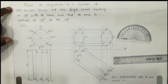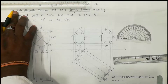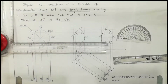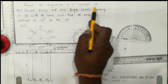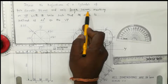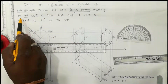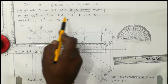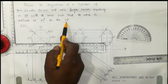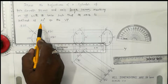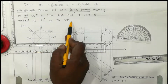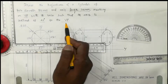The topic is projections of solids. A question is given: draw the projections of a cylinder of base diameter 50 mm and axis length 100 mm, resting on VP with its base, such that its axis is inclined at 40 degrees to the VP. Whenever the axis is inclined to VP, the angle of inclination will come below the XY line — remember this concept from the previous video.